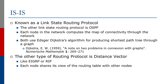IS-IS is known as a link state routing protocol, and the other well-known one, which we will also cover, is OSPF. Each node in the network computes the map of connectivity through the network. Both IS-IS and OSPF use Dijkstra's algorithm for producing the shortest path tree through a graph. You can read more about Dijkstra's algorithm in the reference shown. The other type of routing protocol is distance vector.